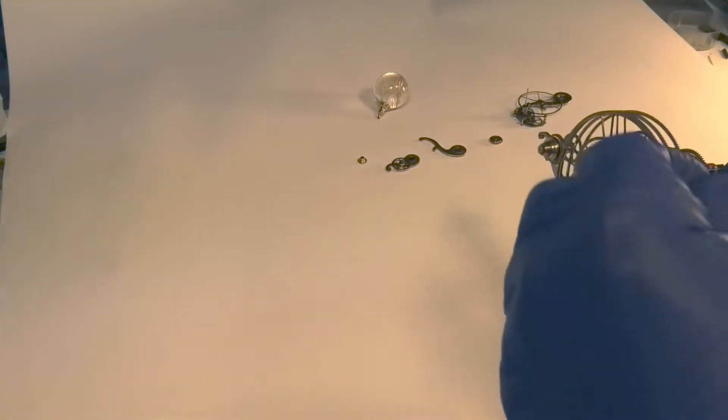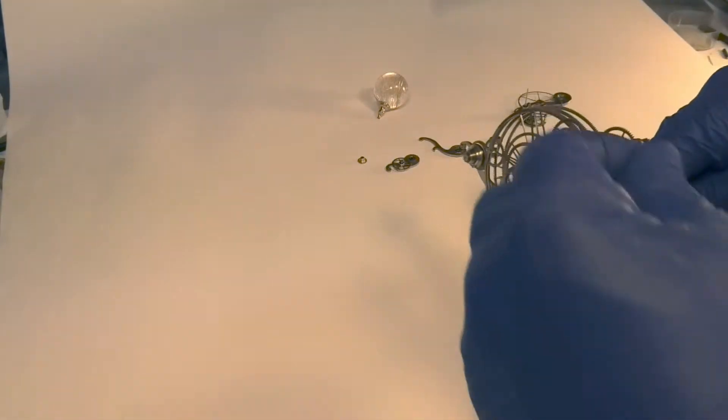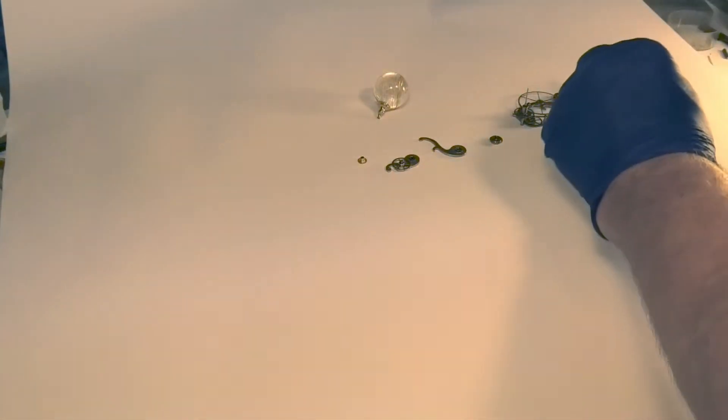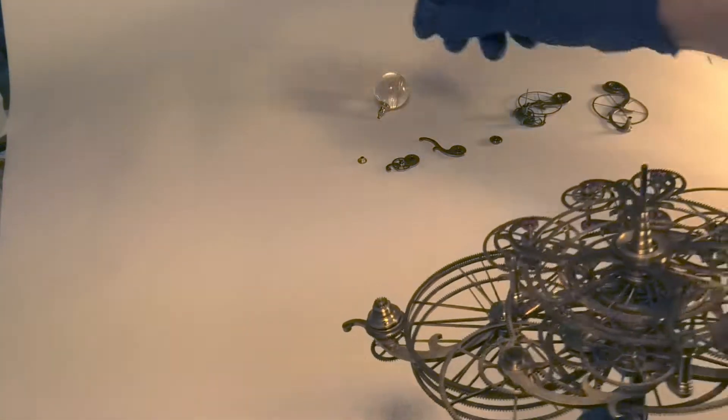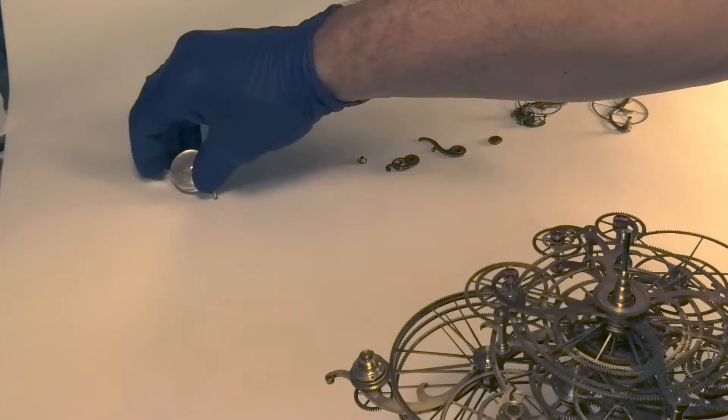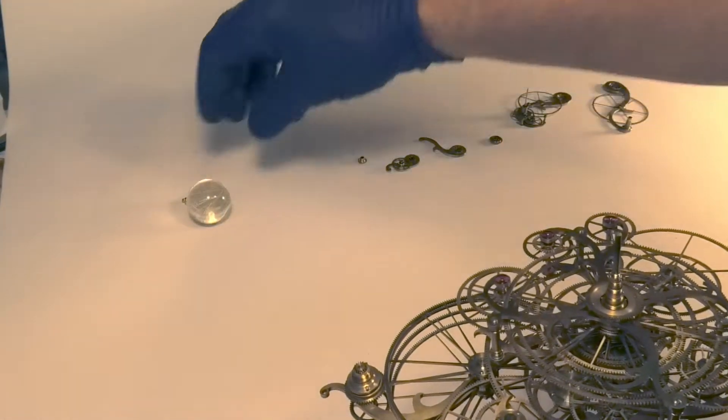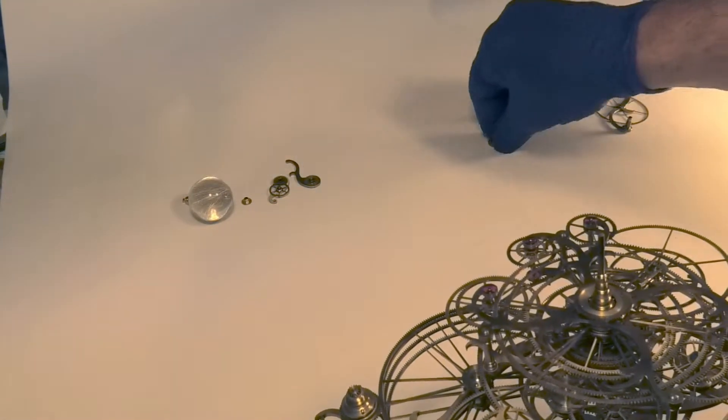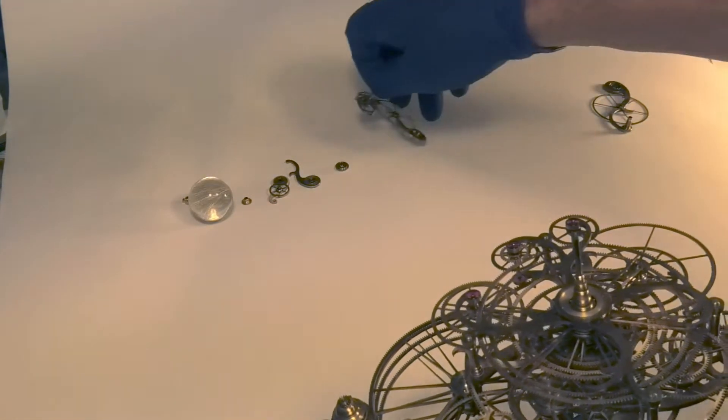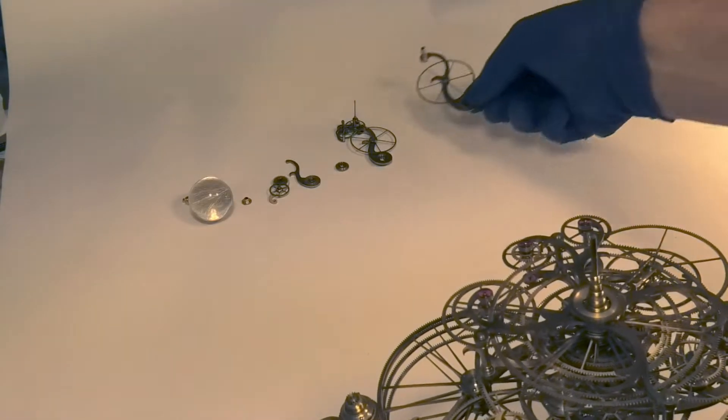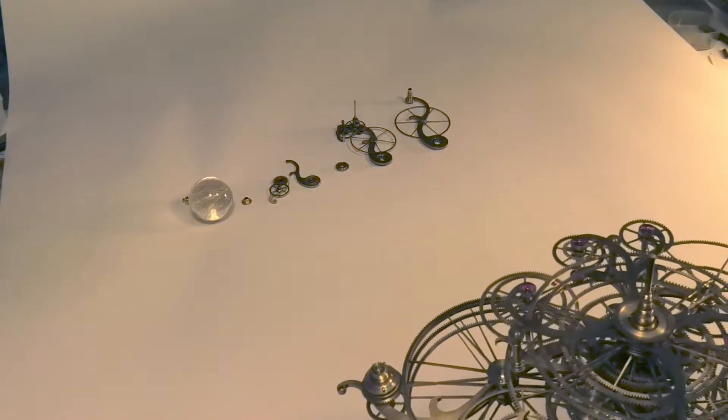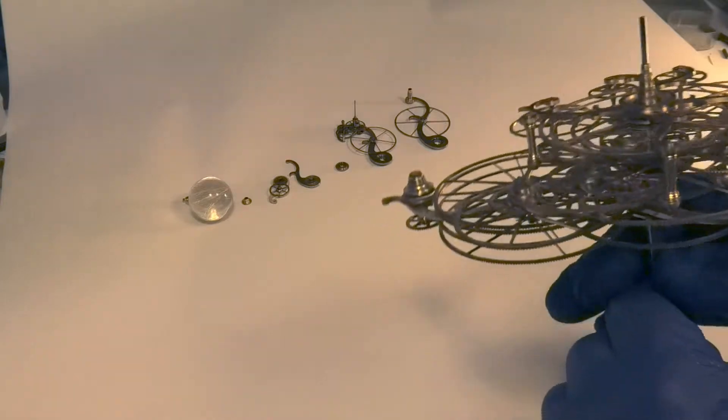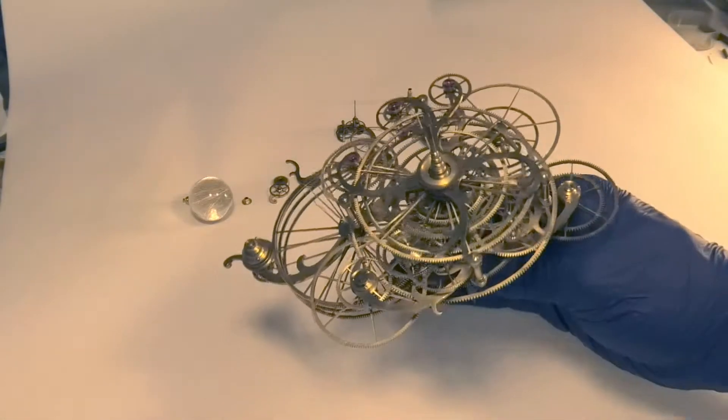And then finally the last arm unscrews. That gives us seven concentric levers. And then we have the center section.